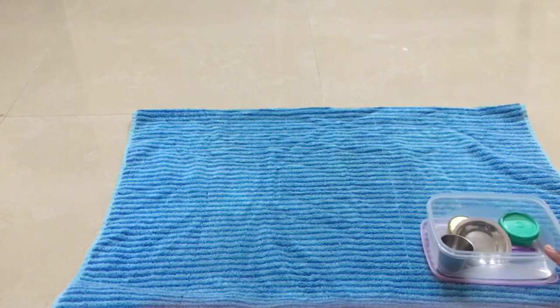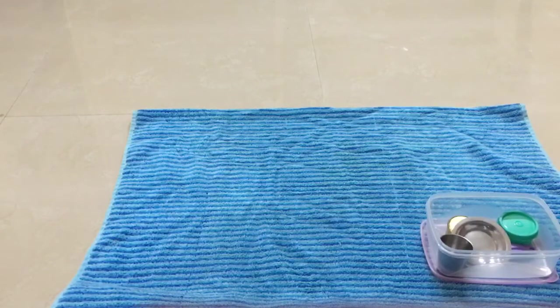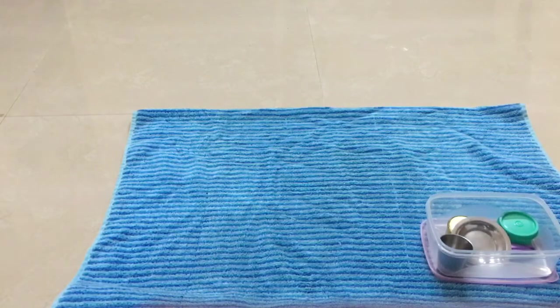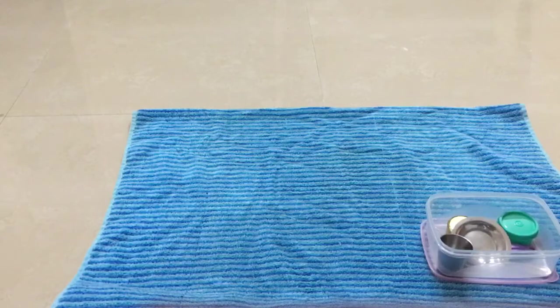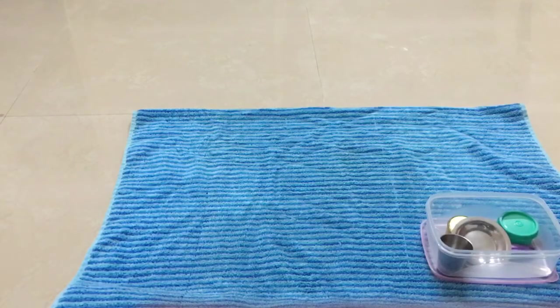Montessori Objects Box Presentation. Object box presentation can be offered through 3-period name lesson. 3-period name lesson is a tool in the Montessori method in the area of language and also other areas such as arithmetic and science.